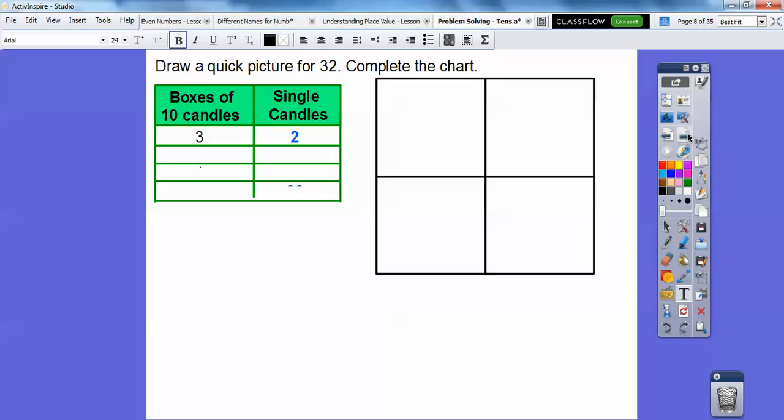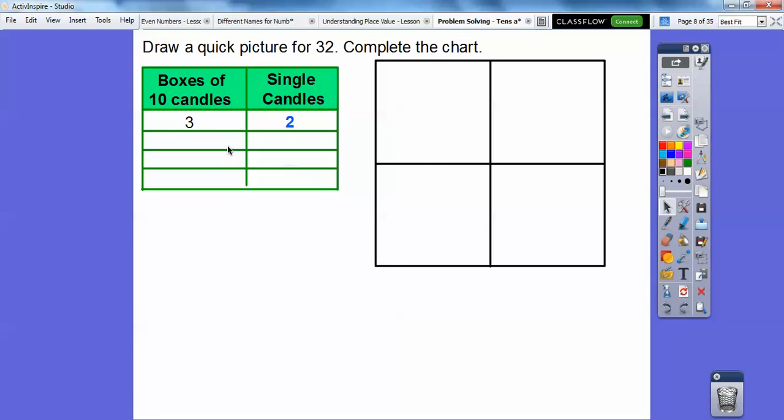So let's draw a quick picture for the 32 candles and complete the chart. So Gary, so remember, he can buy boxes of 10. So this stands for 3 tens right here. So this is actually 30 because 3 tens is 30 and then 32 candles. So 3 tens and then plus 2. So remember, we can draw these sticks right here that count for 10. So 10, 20, 30 and then plus 2 is 32.